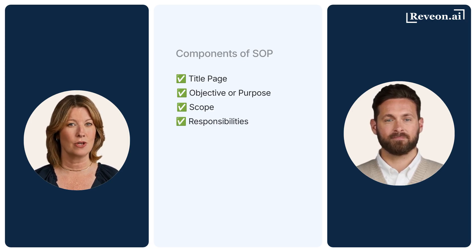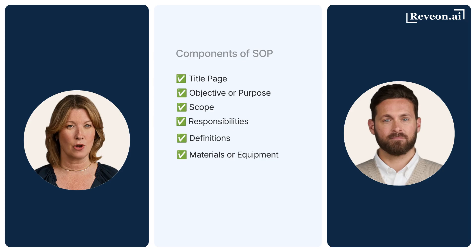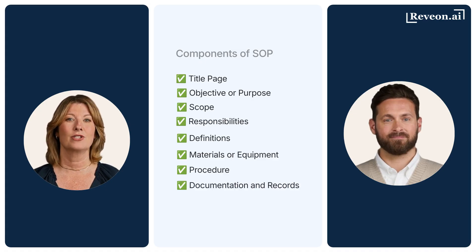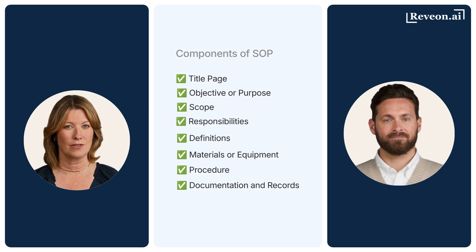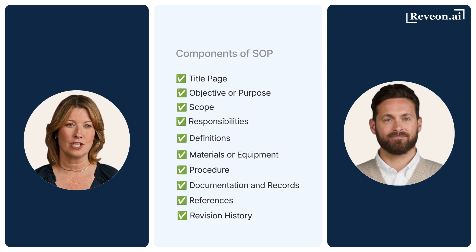Responsibilities — who does what. Definitions — any acronyms or technical terms. Materials or equipment, if applicable. Procedure — step-by-step numbered using imperative language like 'perform' or 'verify.' Documentation and records — what logs or forms need to be filled. References — regulatory citations. And revision history showing version changes and approval trail.